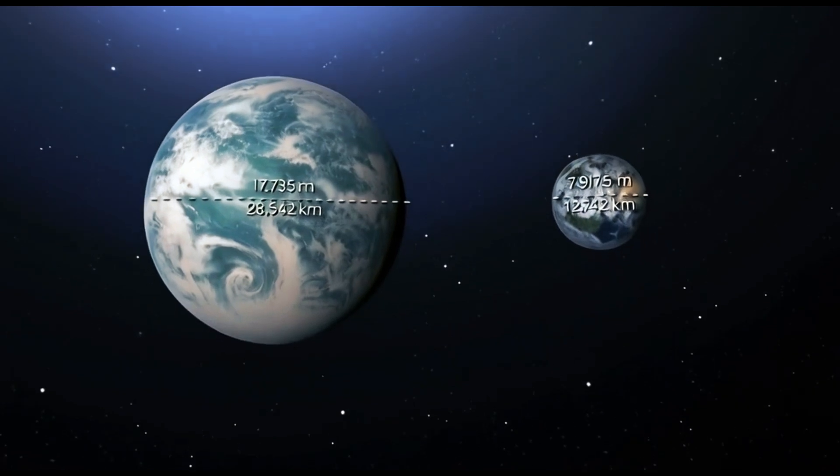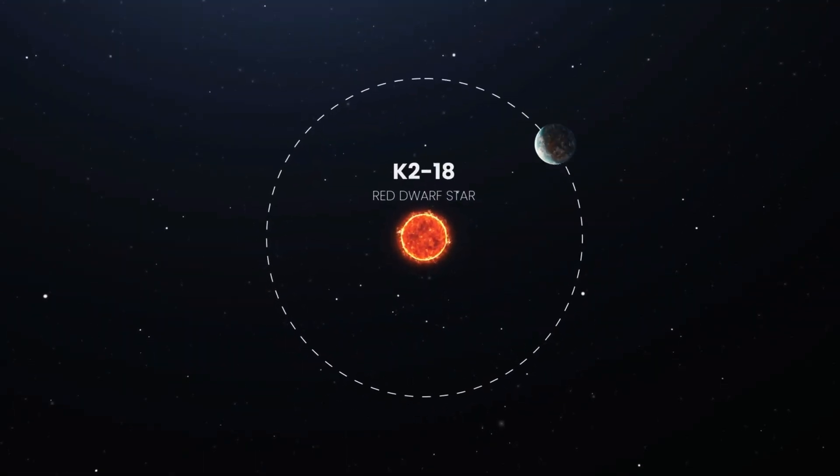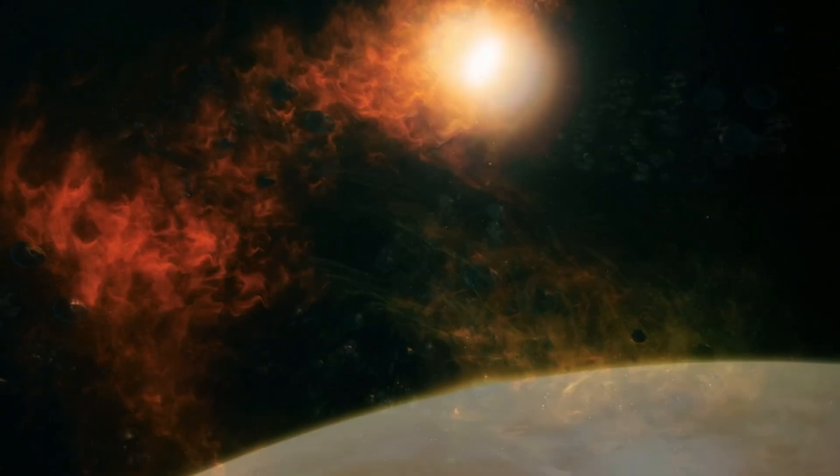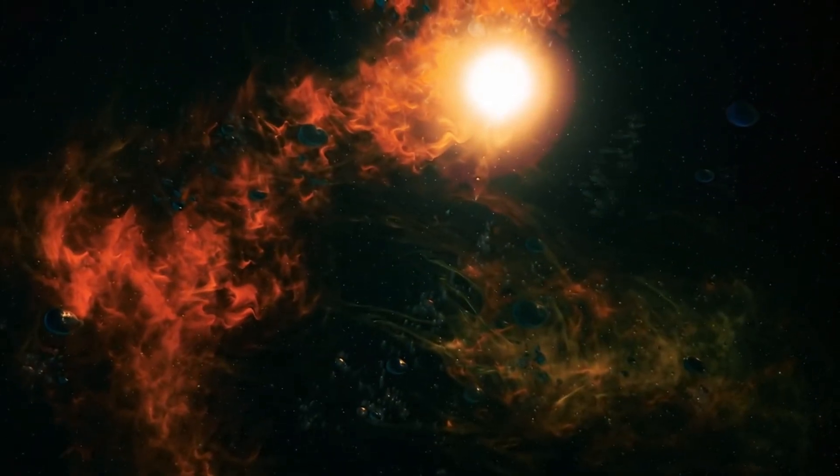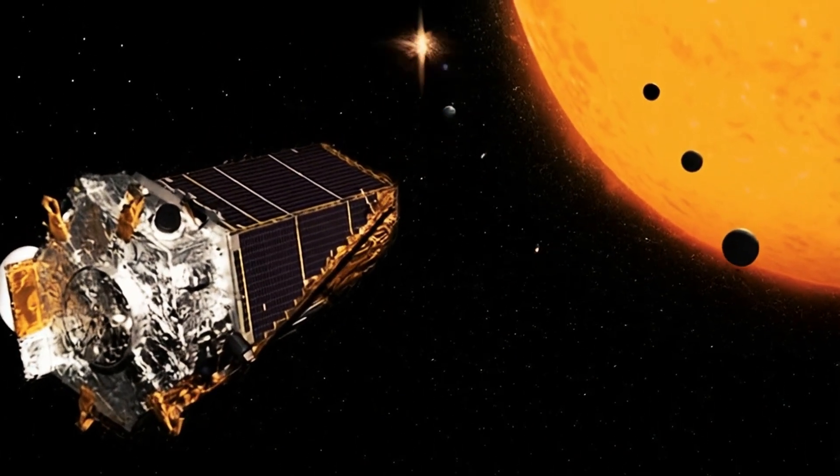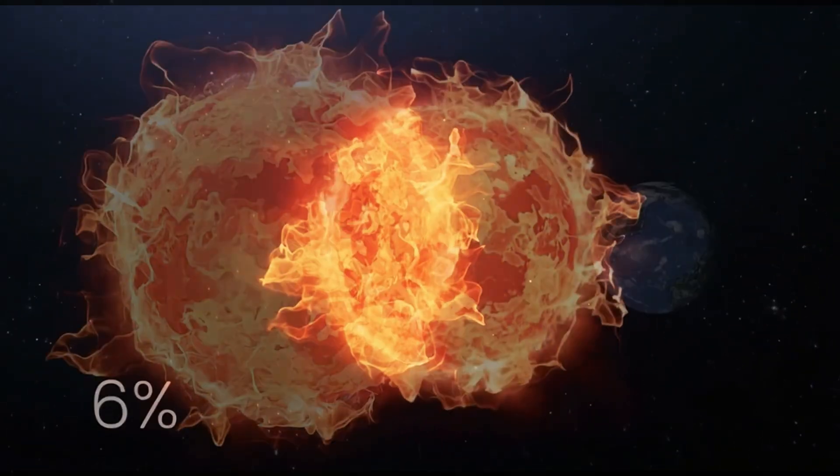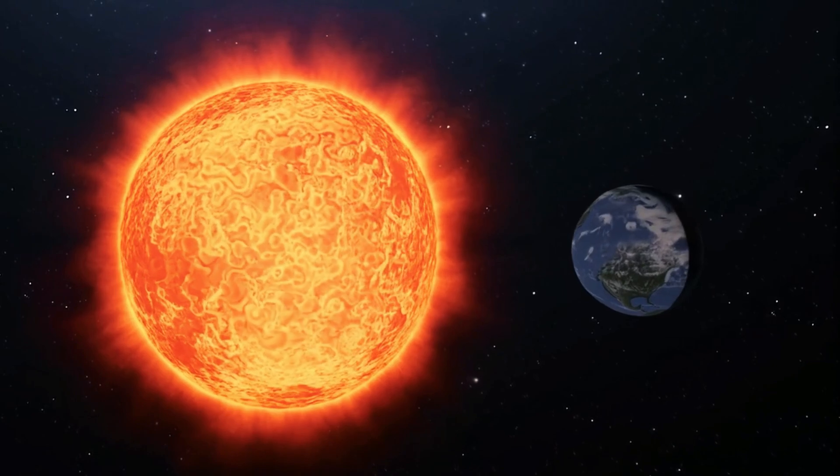It orbits a main-sequence red dwarf star called K218. A red dwarf star is the smallest, coolest star, and by far the most common type of star in the Milky Way. According to Kepler's data, astronomers estimate that 6% of red dwarf stars have an Earth-sized planet in the Goldilocks zone, at least in our neighborhood.